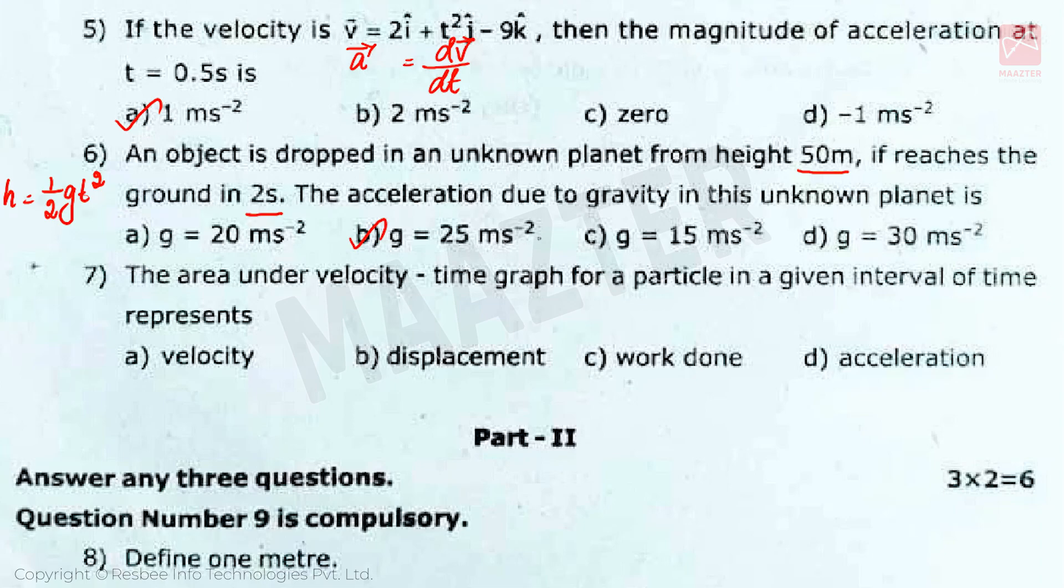Seventh question is: The area under velocity time graph for a particle in a given interval of time represents. Answer is B, displacement.